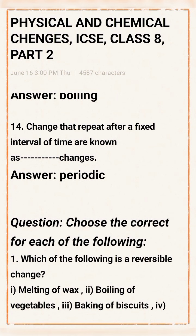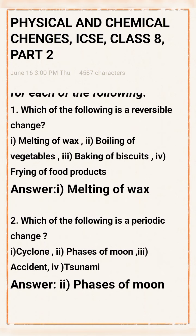Next question pattern: Choose the correct answer for each of the following. Question 1: Which of the following is a reversible change? Option 1: Melting of wax. Option 2: Boiling of vegetables. Option 3: Baking biscuits. Option 4: Frying of food products. Answer: Melting of wax.